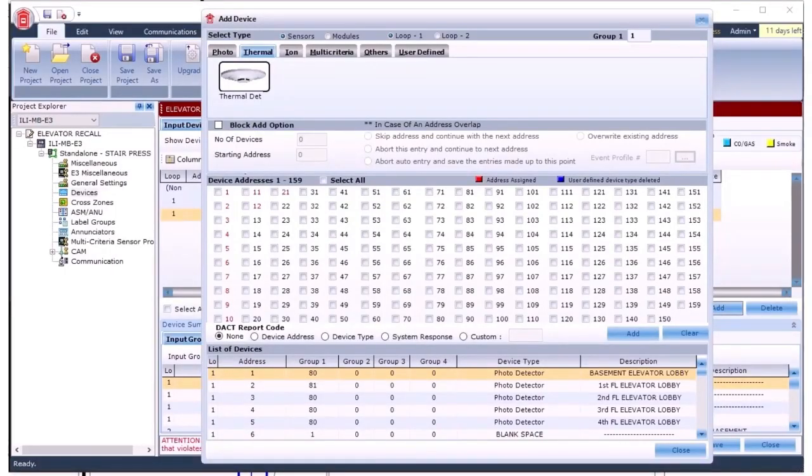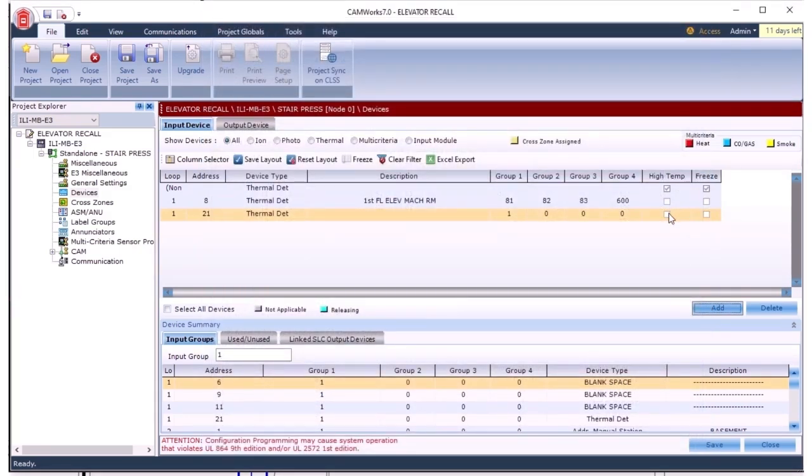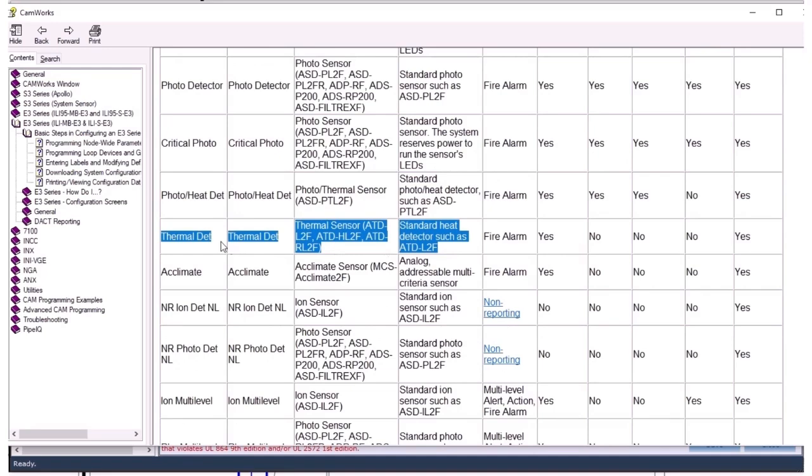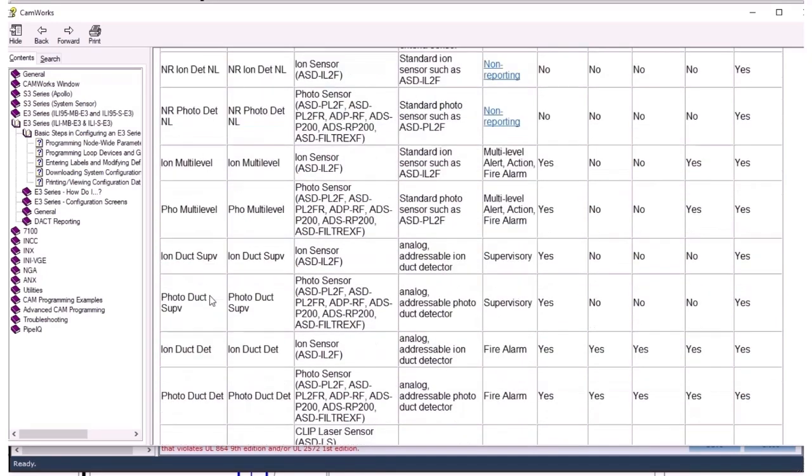Just to mention quickly, for the GameWell FCI product line, programmed with CanWorks, there is only one selection for thermal detectors. So you don't have the type codes and flash scan codes like you do for Notifier. What is done there is if you want a high temp, you click the box to make it high temp. The help file is where the device physical types are found and what your selections for device programming are.